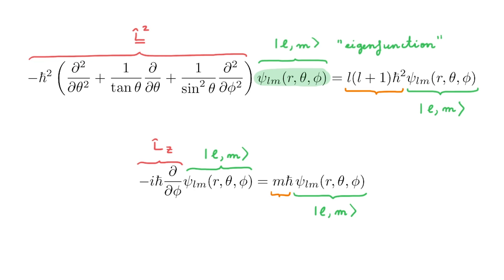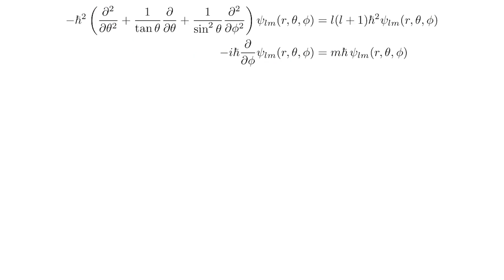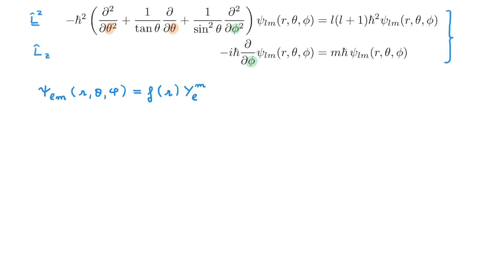In this video, we will look at the properties of the eigenvalues, and you can find the discussion on the eigenfunctions in the corresponding video linked in the description. The first important thing to note is that the differential operators in both of these equations only depend on the angles theta and phi, but don't depend on r. This means that we can use a separable trial solution for psi, which is the product of a function that only depends on r, and a function that only depends on the angular variables.